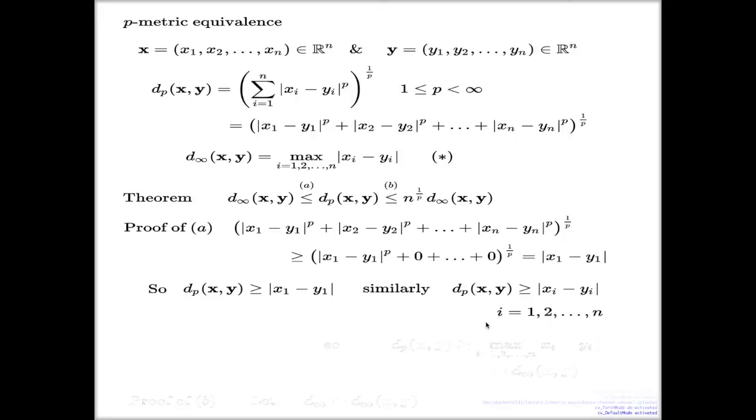So from here I can say now if my dp metric is greater or equal than every individual difference, obviously it will be greater or equal than the max of those differences. If it's bigger than every individual number, it's bigger than the max of those numbers, right? But the max of those numbers is the d infinity metric, and that finishes the proof of this inequality.